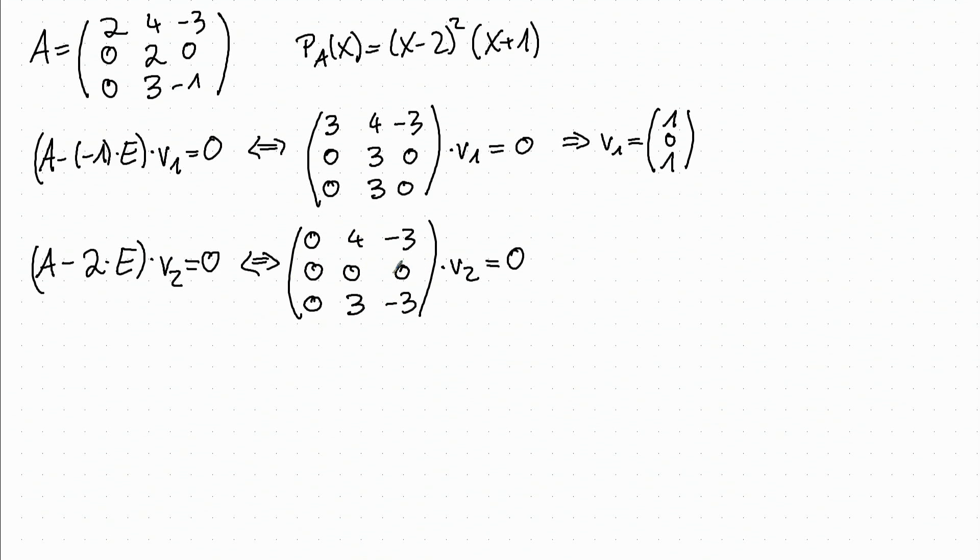So this row again gives us nothing, it is a useless condition. But if we put those two rows together, first row and third row, we see that the second entry has to be 0. And this row shows us that the second and the third entry has to be equal, so the third entry also has to be 0. We have no information on the first entry, so we can choose it freely as 1.